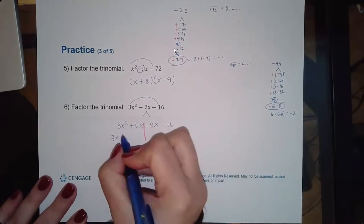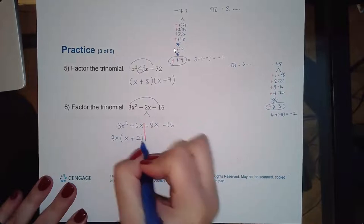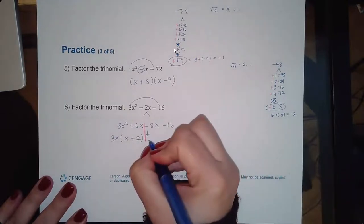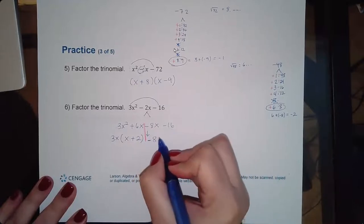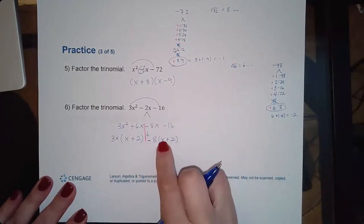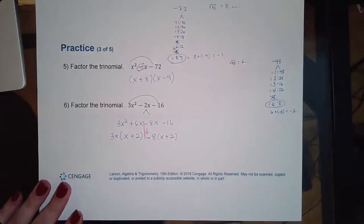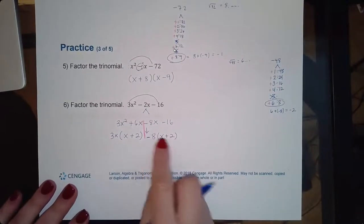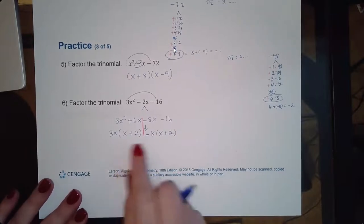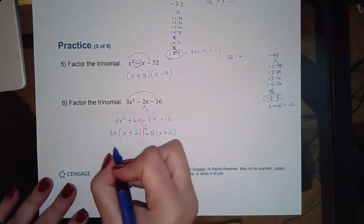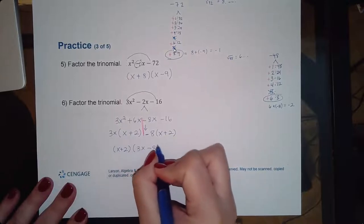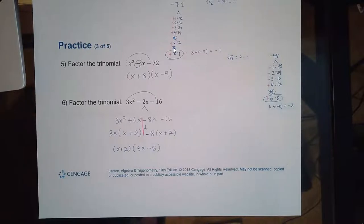Combining those two variable terms does give negative two x. From here we group: the left side has a three and an x in common, which gives x plus two. Distribute back in to make sure you get those two entries. Bring down the minus sign — these two can both be divided by eight and should give the same parentheses, x plus two. Both sides have x plus two in common, leaving three x and eight, so that's the complete factorization.